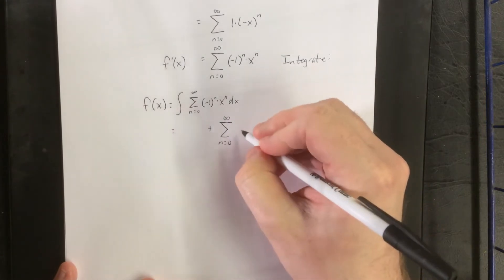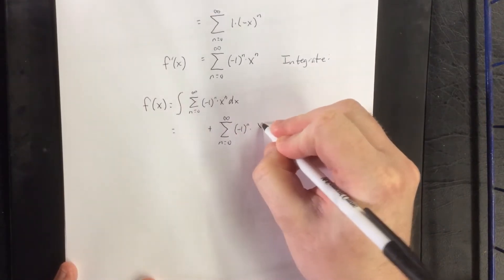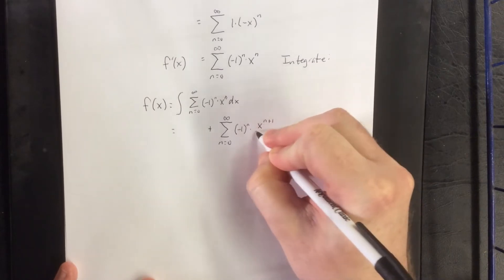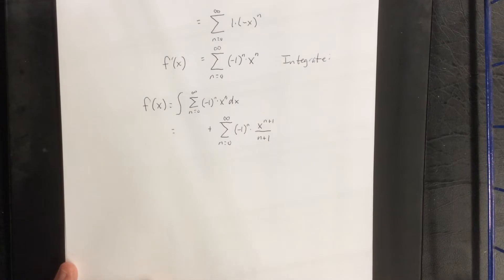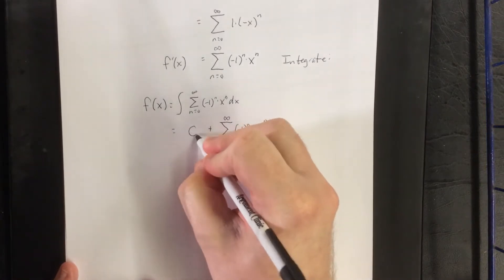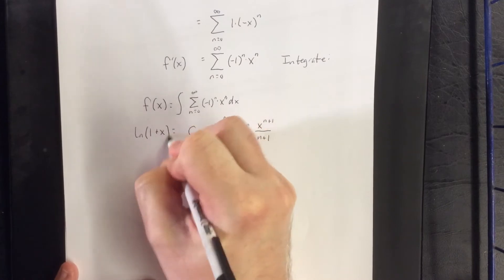So power of x goes up by 1, the constant multiple stays the same. So this will be x to the n plus 1 power divided by n plus 1. Additionally when we integrate we'll also get a constant of integration and this takes us back to the natural log of 1 plus x.